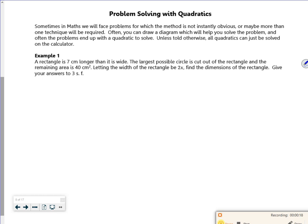So it says a rectangle is seven centimeters longer than it is wide. The largest possible circle is cut out of the rectangle and the remaining area is 40 centimeters squared. Let the width be 2x. So I know the width is 2x and I know it's seven centimeters longer. So let's have a circle, let's have a rectangle around it.